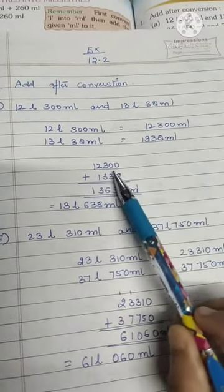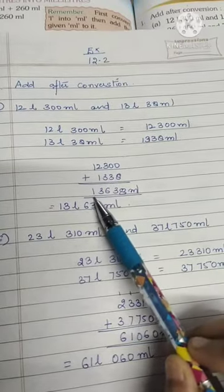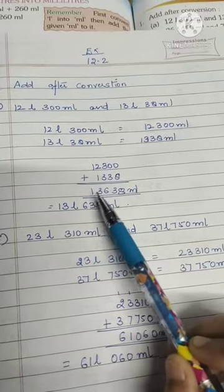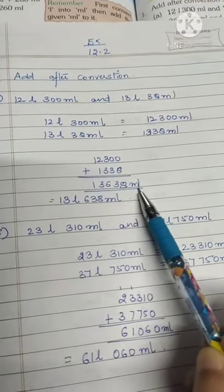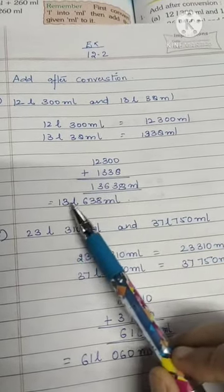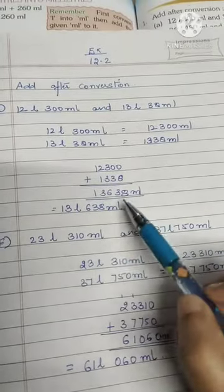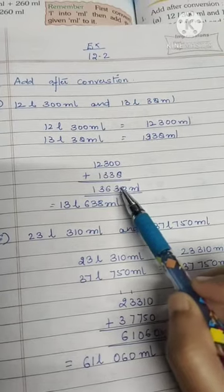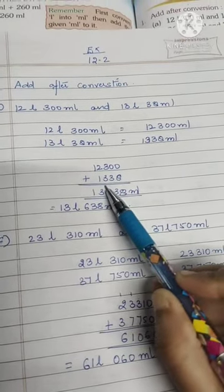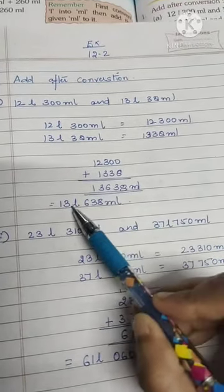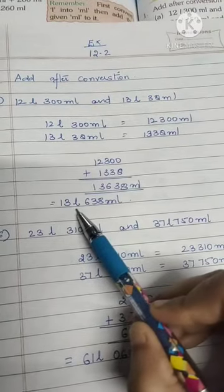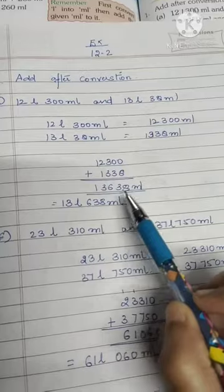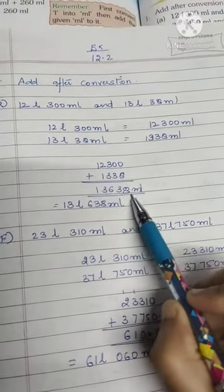Then you will add both the numbers. The sum you will get is 13,638 milliliters. Now you will write it separately. For separating, from the backwards you will count three numbers - that is 8, 3, and 6. So you will divide this number, that will be 13 liters and 638 ml. Pichay se aap teen numbers ko alag kar denge, to woh ml mein chala jayega aur baaki remaining will go in the liters.